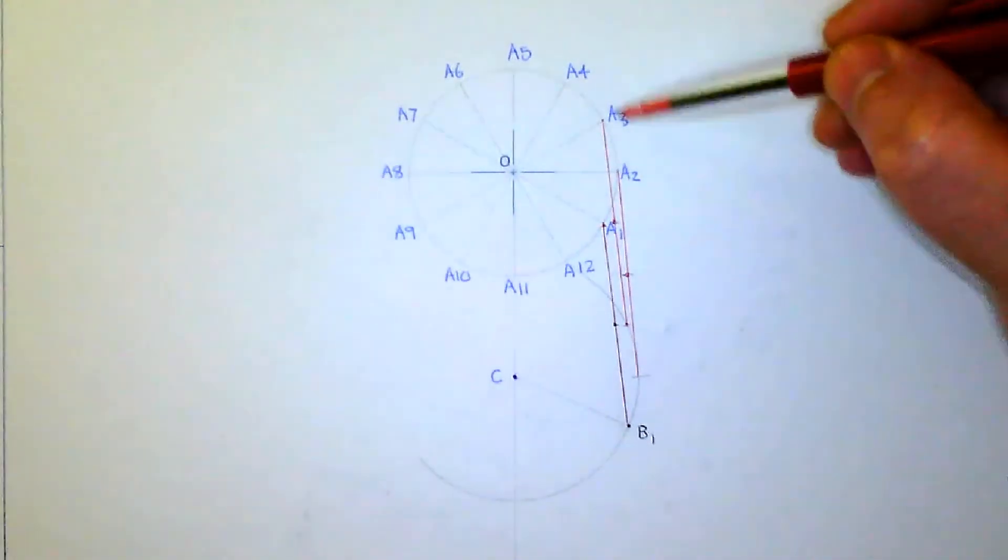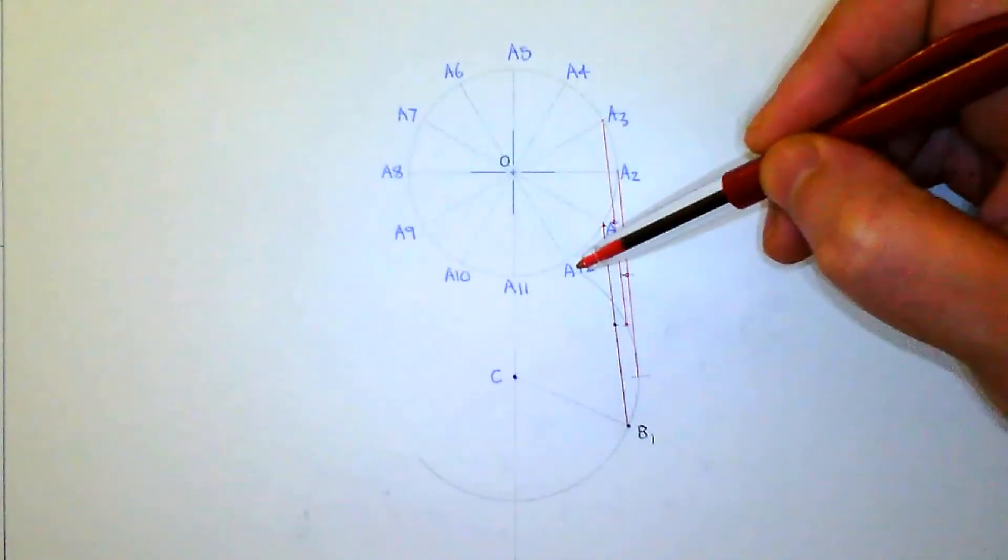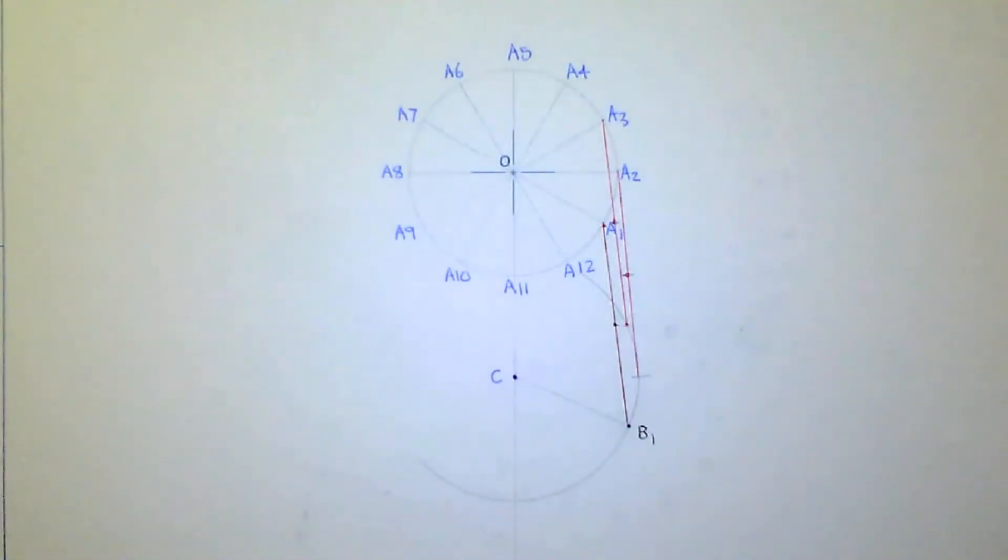And if you follow those steps going round all the way to 12 with the same method, eventually you will have all the points.